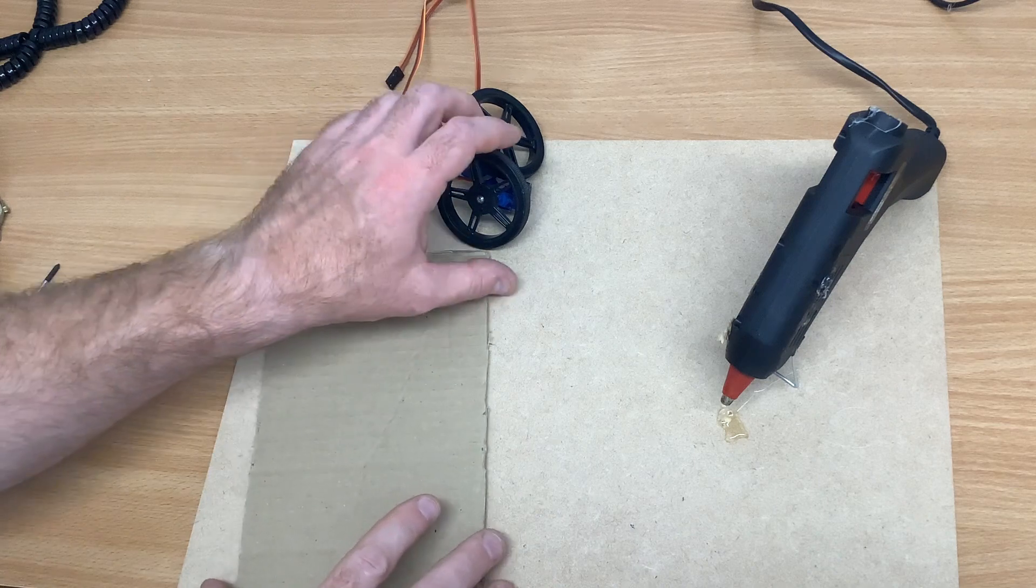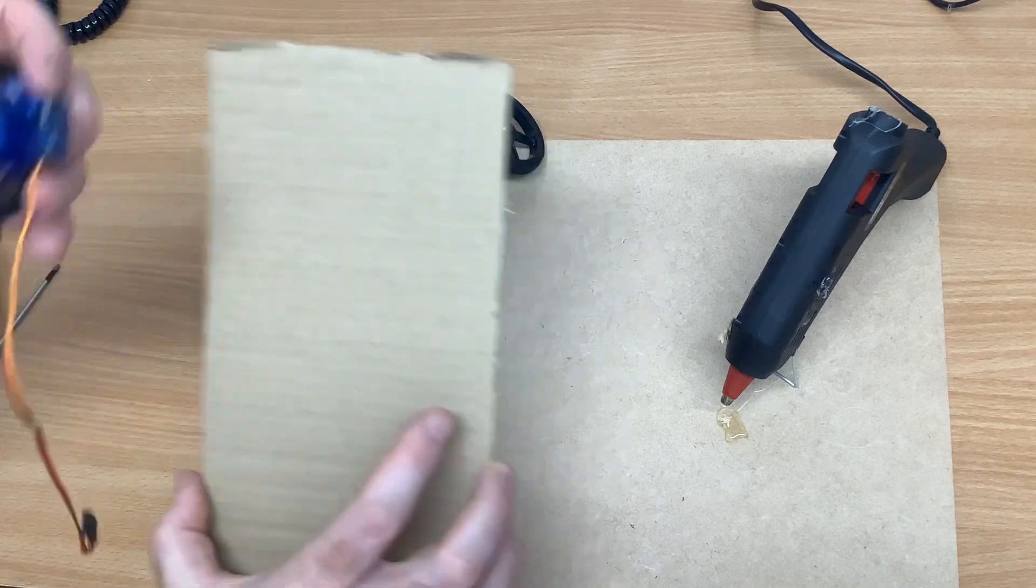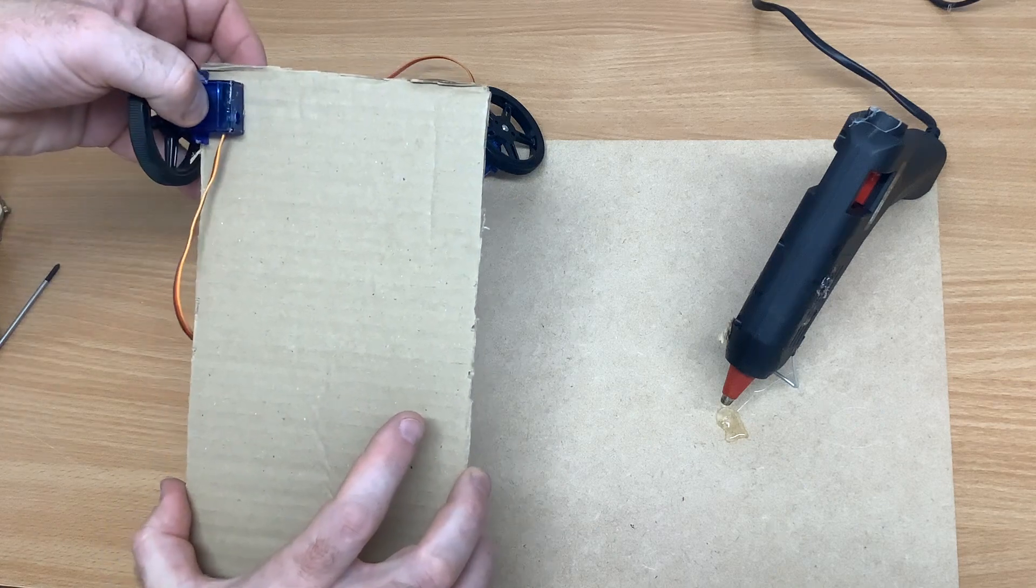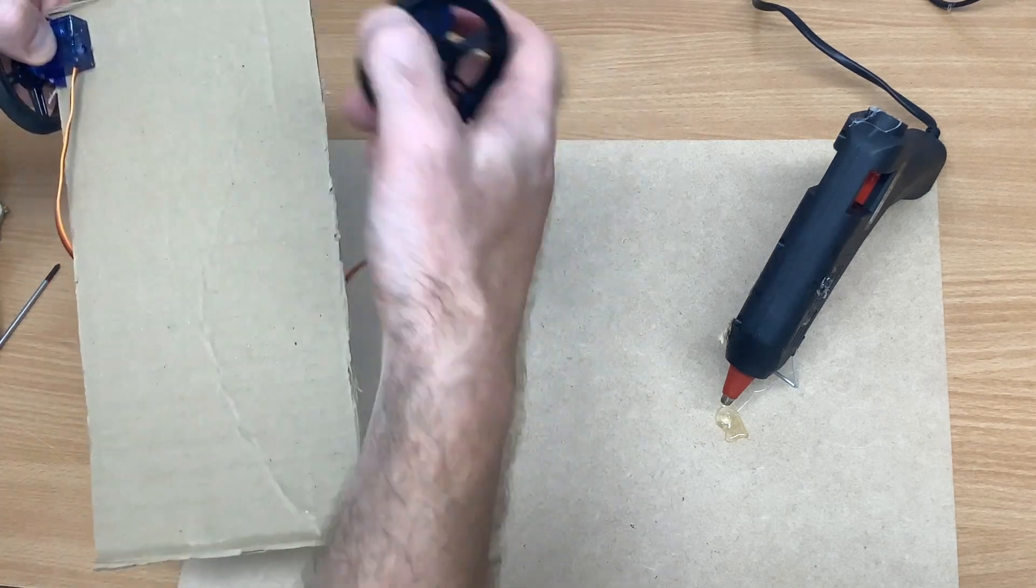The next stage is to glue the servo motors to the piece of card. We're going to put one servo here and the other servo on the other side.